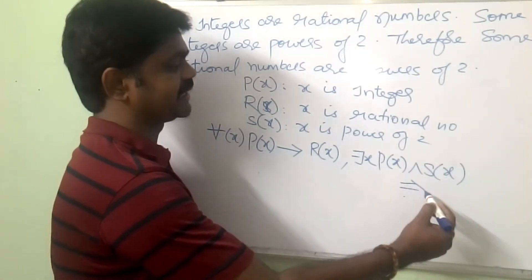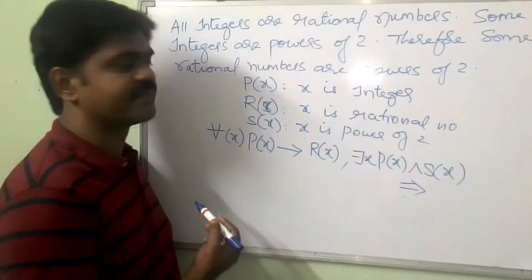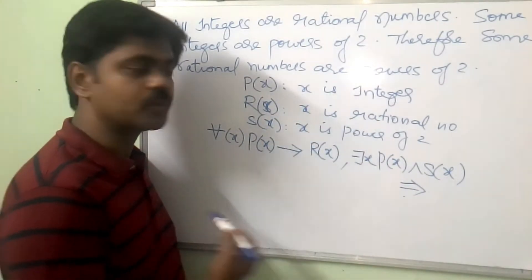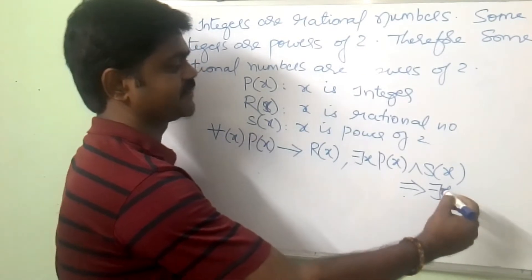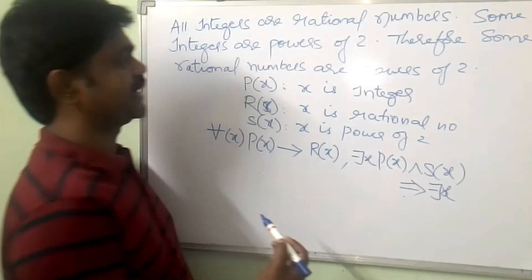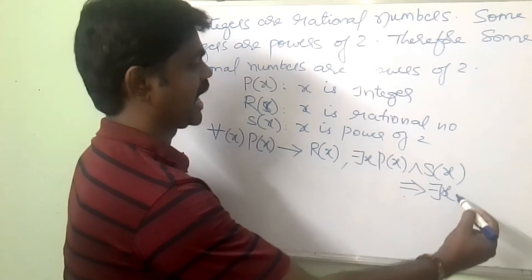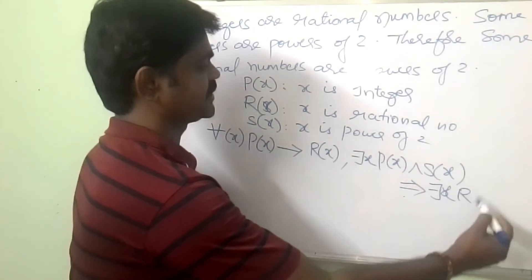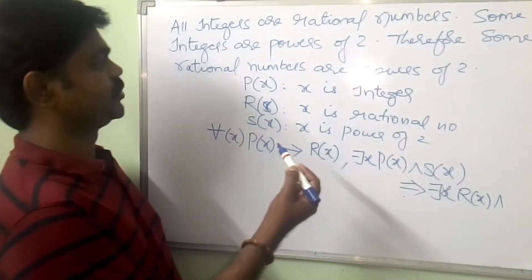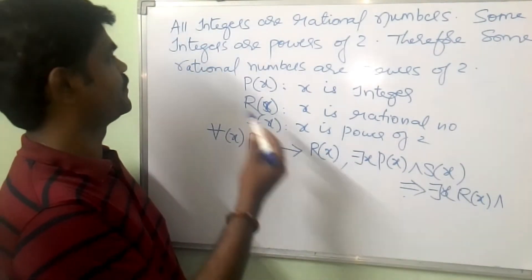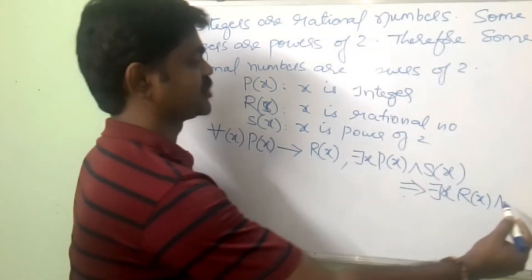And what is the final conclusion? Therefore, some rational numbers are powers of 2. Some means there exists X: rational number means R of X, and powers of 2 means S of X.